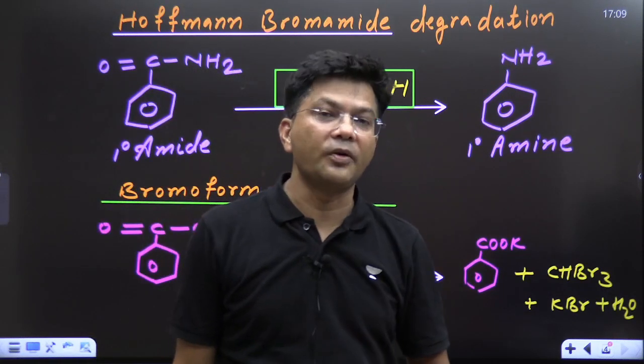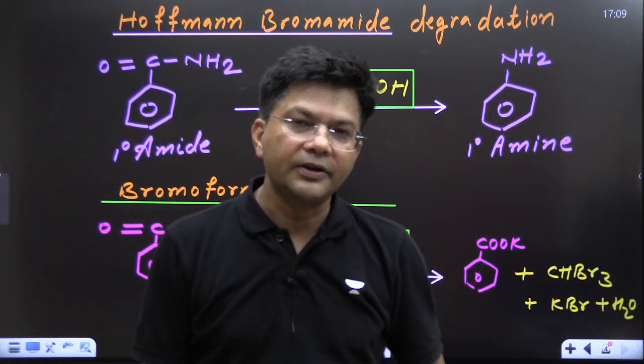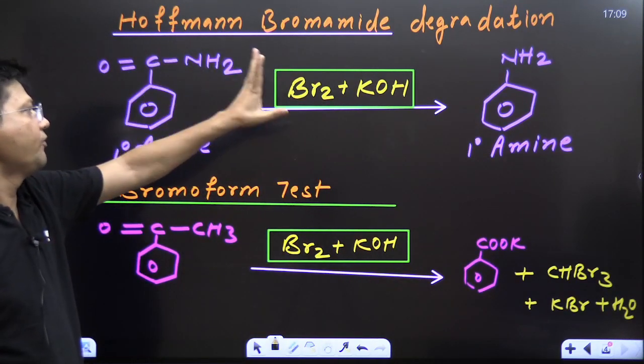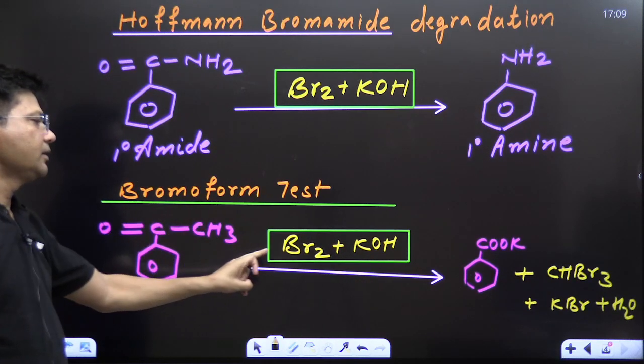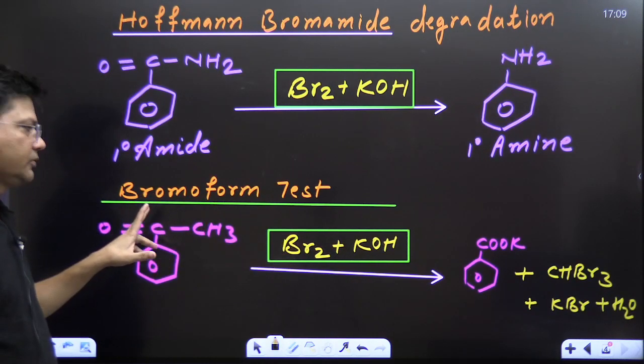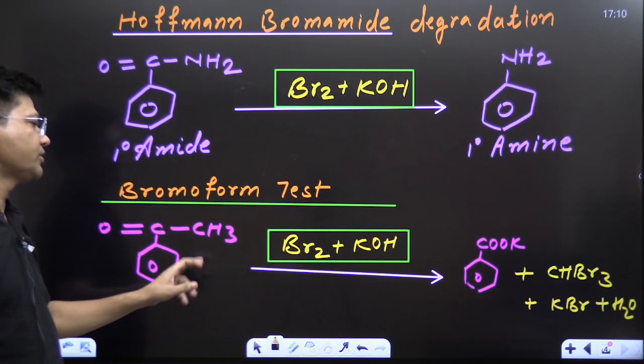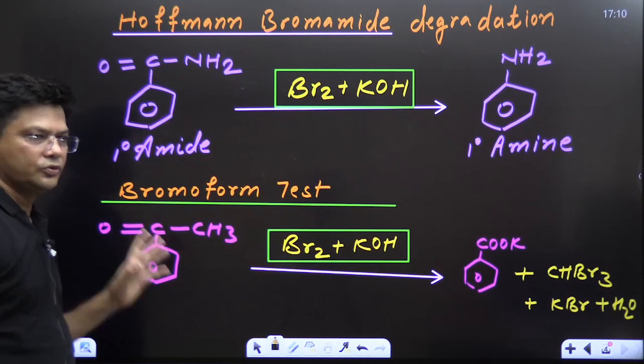Bromoform test. That you can say haloform test, chloroform, bromoform, iodoform test. So, just remember CONH2, then Hoffmann-Bromamide degradation, COCH3, then haloform test that is going to form CHBr3. If I2 and KOH is given, then CHI3, yellow color PPT, otherwise bromoform.